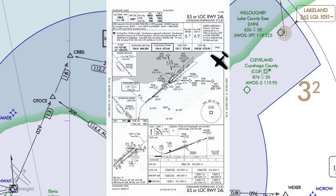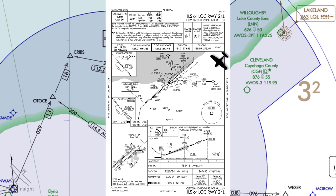At a non-towered field, we'd need to remain clear of clouds and contact ATC as soon as we can. In scenarios where we don't have communication or in case of loss of communications, we'll want to know the minimum safe altitude — 3,100 feet here — so we know where we can safely climb to in the absence of any instruction.